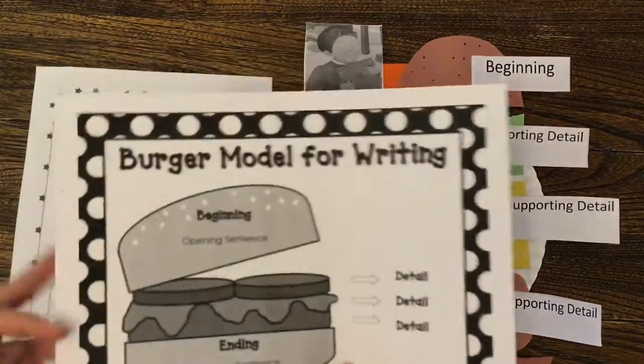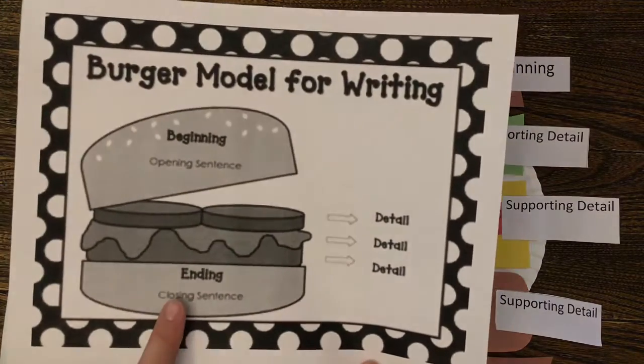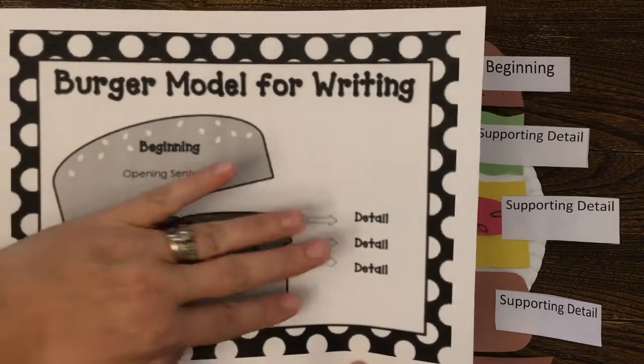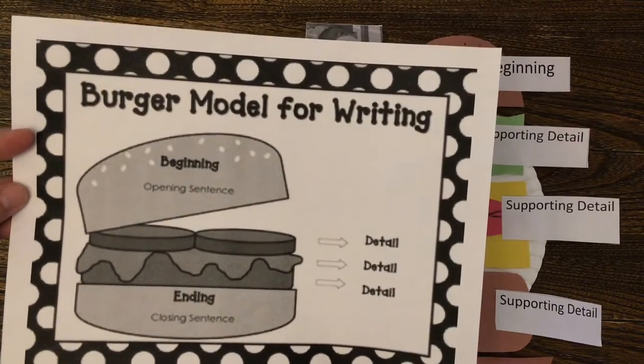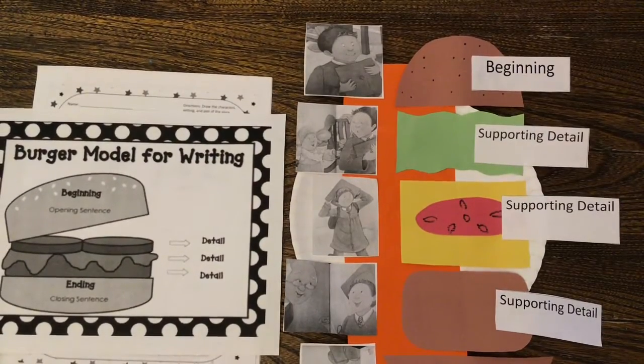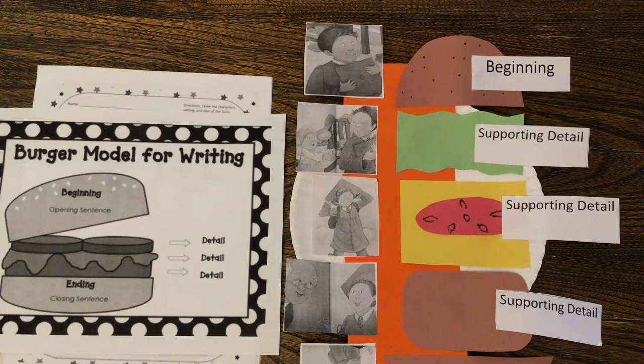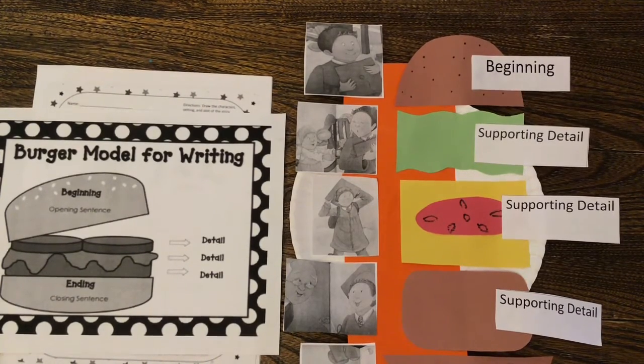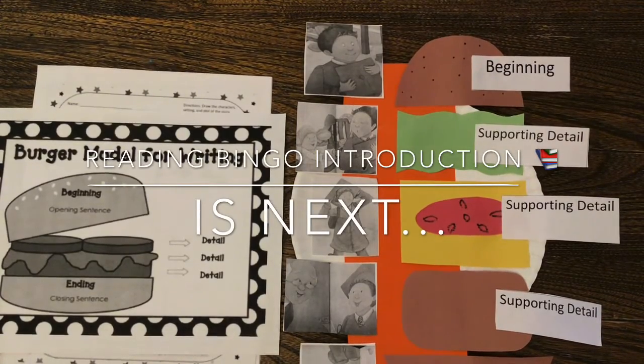And don't forget, every time you have a hamburger you can think about the top bun and the bottom bun and the three details in the middle. That's a great way to write a story or to organize stories. I'm very proud of your hard work today. Thank you for coming along for Tell a Tale Tuesday. We have one more exciting part for Tell a Tale Tuesday. It's coming up with Bingo.